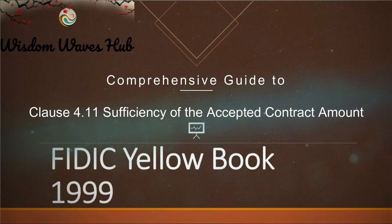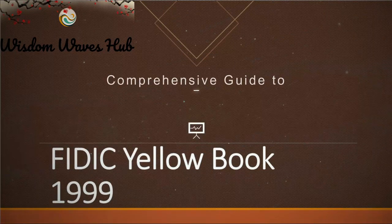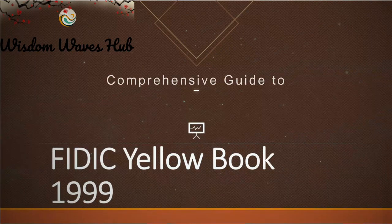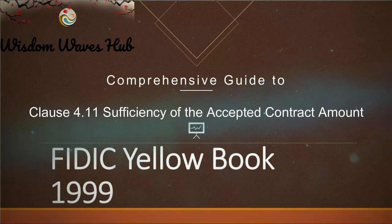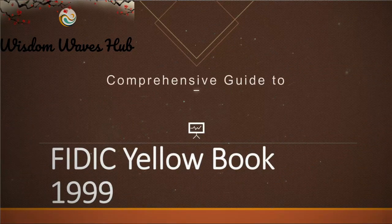Implications: This clause is a safety net. It's there to ensure financial security for both parties in a contract — a promise that there won't be any unexpected costs that could throw a wrench in the project's progress. But it's not just about the numbers. It's about understanding the project's scope, potential risks, and ensuring that everyone is on the same page.